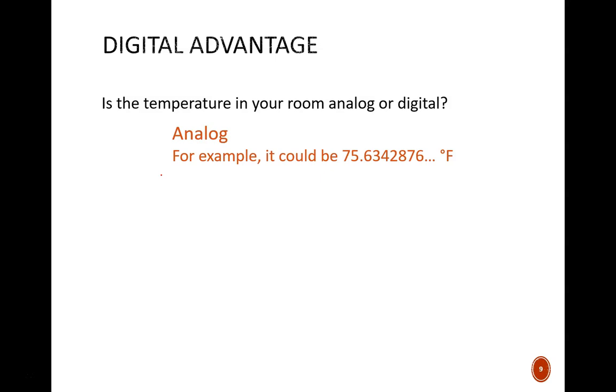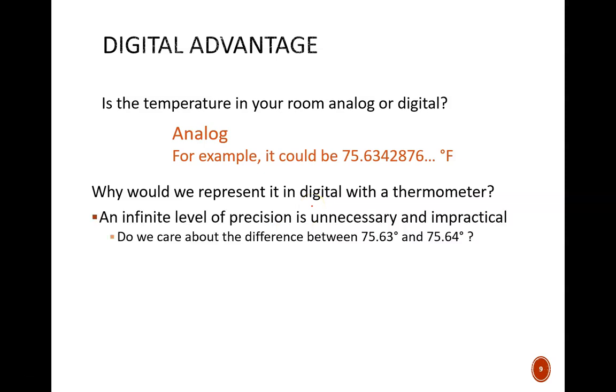Pretty much any physical quantity, such as air temperature, car speed, food saltiness, is analog. If these things are truly analog, why would we measure them digitally? Because an infinite level of precision is unnecessary and impractical. Do you really care about the difference between 75.63 degrees and 75.64 degrees? There comes a point where you can safely round a value and still have the information you need.